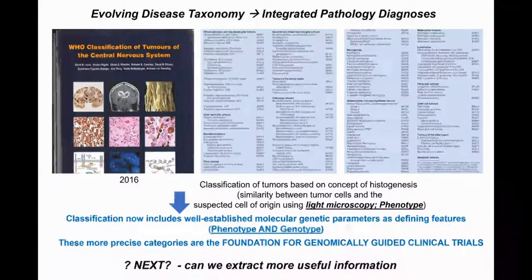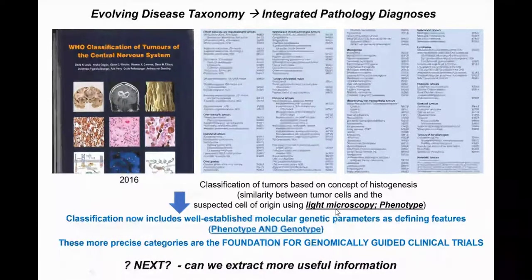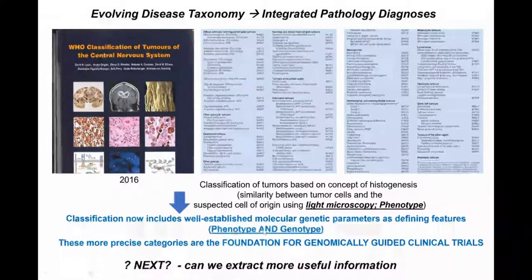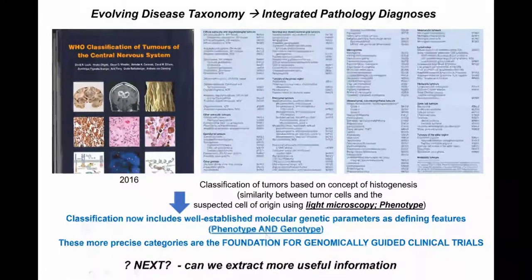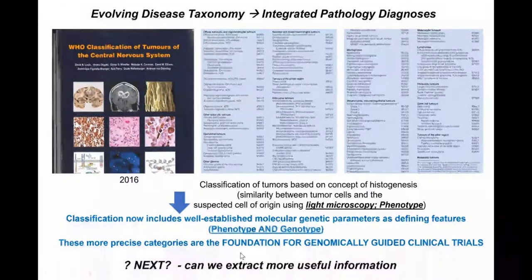Our role in pathology is as disease taxonomists. Our goal is to classify tumors based on the concept of histogenesis — the similarities of tumor cells with the suspected cell of origin — using microscopy, immunohistochemistry, and H&E. Recently, we started integrating genetic information into this diagnostic process, so classification now includes well-established molecular genetic parameters as defining features of tumors. These more precise categories are the foundation for genomically guided clinical trials. But what's next, and can we extract more useful information from these slides?